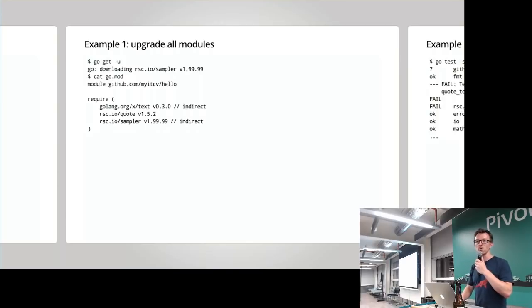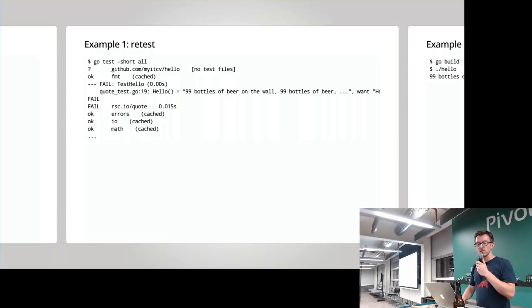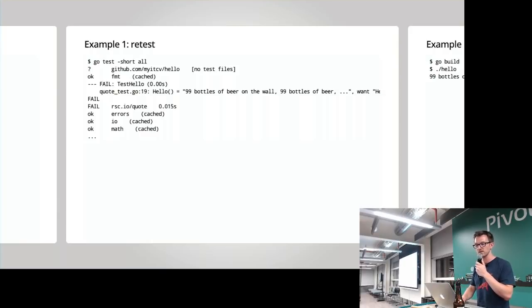Let's move on to upgrading all modules — something you might want to do at any point. Go get minus u might not be a sensible thing to do given the earlier points we made, but let's do it anyway. Now let's check what our go.mod looks like — we've actually upgraded the sampler to 1.99.99. Let's do another quick retest. A lot of the tests, specifically the standard library tests, are totally cached because the code representing those standard library packages hasn't changed at all. But you can see a sum test failing — it involves some bottles of beer on a wall.